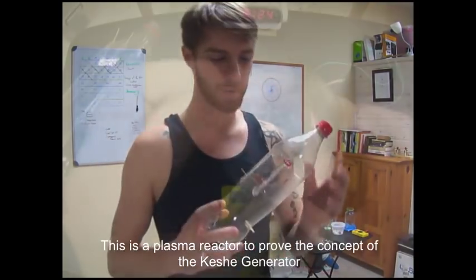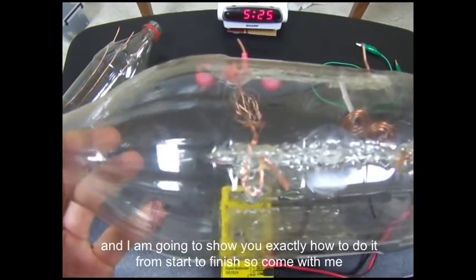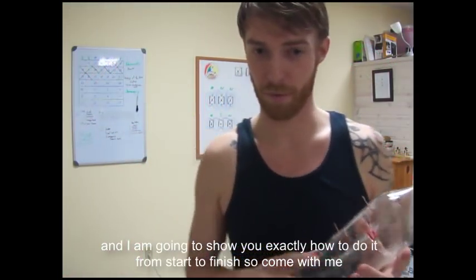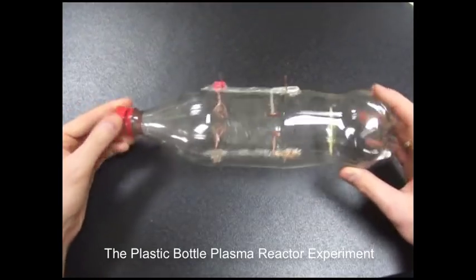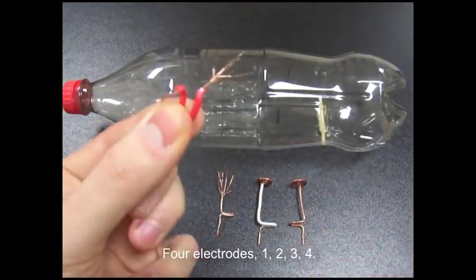This is a plasma reactor to prove the concept of the Keshe Generator. And I'm going to show you exactly how to do it from start to finish. So come with me. This is the plastic bottle plasma reactor experiment. Four electrodes.